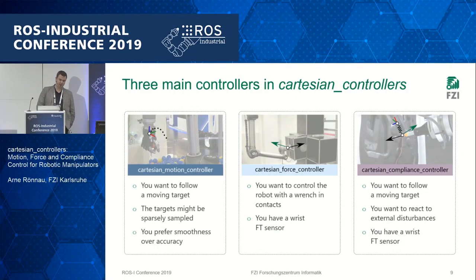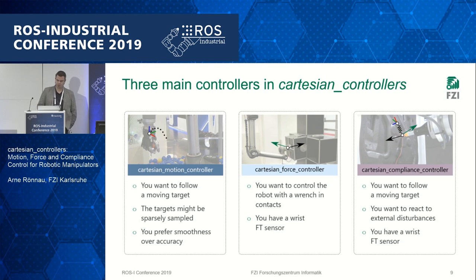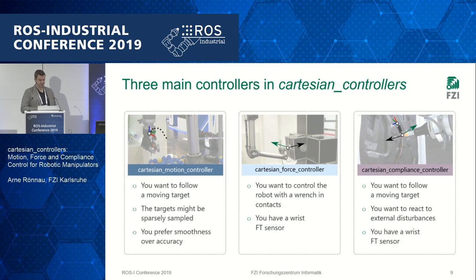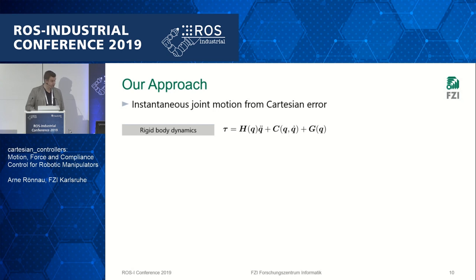We offer three options. First, a very simple way of using Cartesian motions — when you want to follow a moving target or sparsely sampled targets with very smooth motion, without solving inverse kinematics. Second, force control — when you want the robot in contact with something, looking at the wrench; you need a force-torque sensor. Third, compliance control — combining both worlds: following a moving target while reacting to external disturbances, but again requiring a force-torque sensor.